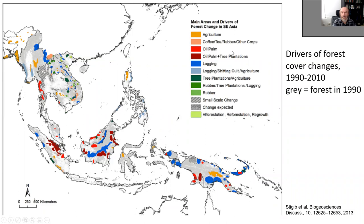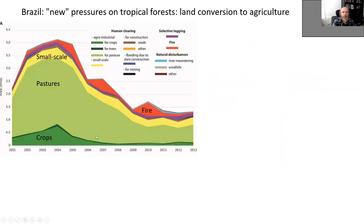A more detailed map shows individual commodities: oil palm, coffee, rubber, and other plantations in different areas. Brazil illustrates current pressures on tropical forests that no longer primarily involve logging for timber — that's actually a minority shown in violet over the last 13 years. Brazil's forest loss is dominated by conversion to pastures and crops, which is a bigger disaster because selective logging still maintains most local diversity while converting to pastures and plantations destroys it. Small-scale swidden agriculture is a minority in Brazil.